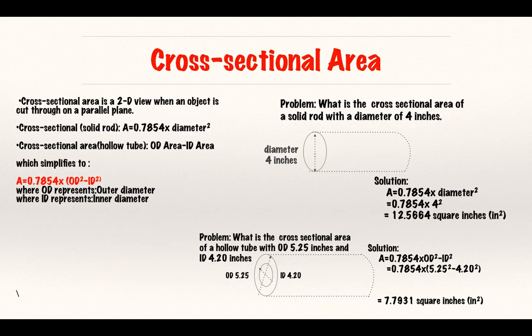Next we have cross-sectional area, the 2D view when an object is cut through on a parallel plane or when it's cut through in half. When I cut my object in half, as long as both sides are equal, both surfaces are equal.